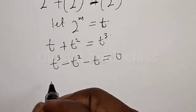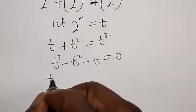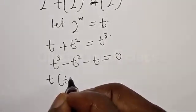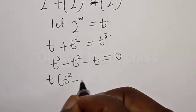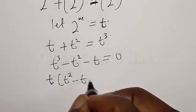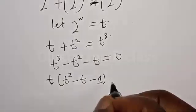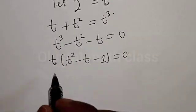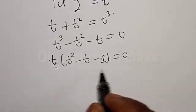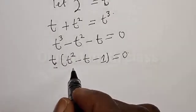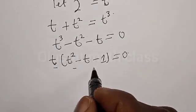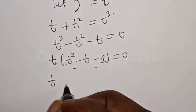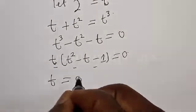Now let's equate everything to zero: t cubed minus t squared minus t is equal to 0. Factorizing, we get t times the quantity t squared minus t minus 1 is equal to 0. Therefore t equals 0 is one of the roots.